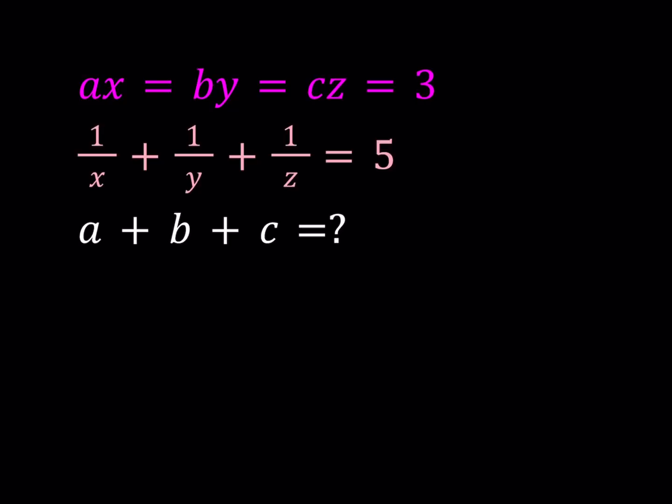We have four equations and six unknowns. A, B, C, X, Y, Z are all unknown, pretty much. And we're supposed to find A plus B plus C.